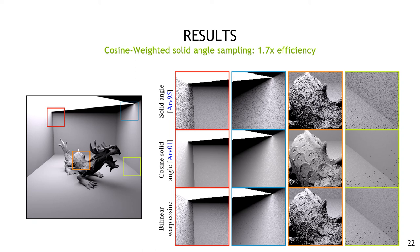A biquadratic warp for the cosine term performs slightly better with a 1.9x efficiency factor increase. The efficiency numbers are averaged over the whole image which has a large soft shadow. Since we're not accounting for visibility in our warps, the relative efficiency changes depend on whether a given sample point is in a penumbra region or is unoccluded. Comparing to Arvo's method for cosine weighted solid angle sampling, we found that for a diffuse BRDF Arvo's method is 28% more efficient than our composed warp — but another way to look at it is that you can get to within 70% of the ideal sampling method with almost no effort by composing just a single additional bilinear warp. In contrast, Arvo's cosine weighted solid angle sampling is rather difficult to implement and the sampling procedure alone is quite slow.